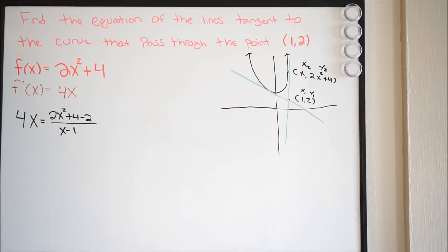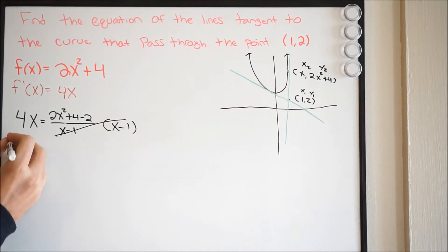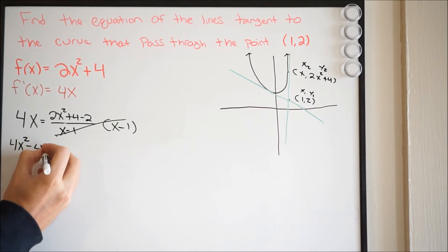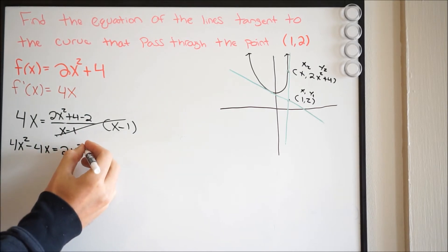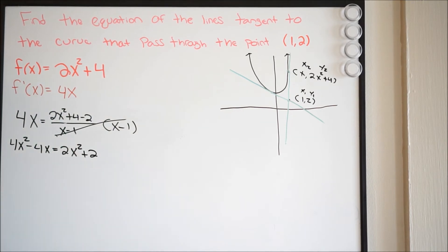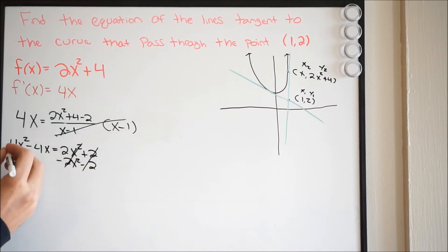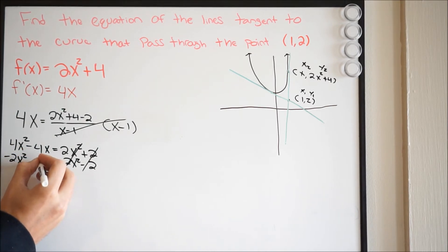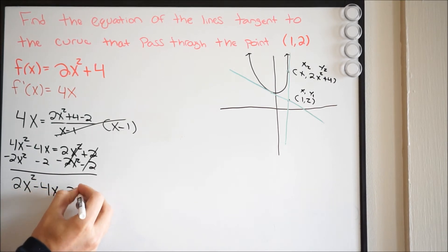I'm going to multiply both sides by (x − 1). This cancels on the right, and on the left I get 4x² − 4x. This equals 2x² + 2. Moving all terms to one side, we subtract 2x² and subtract 2, giving us 2x² − 4x − 2 = 0. We can see we're dealing with a quadratic.